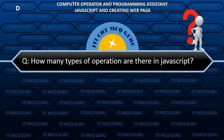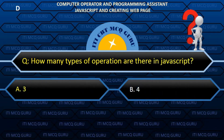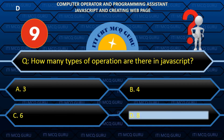How many types of operations are there in JavaScript? B.